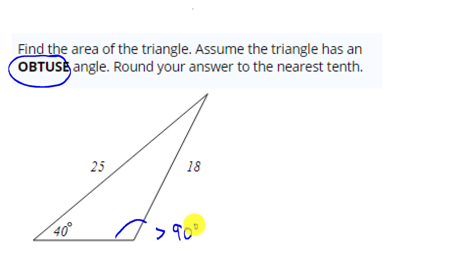In order to find the area of a triangle, we want one-half the base times the height. But remember, the height has to be a line that is perpendicular to one of the sides.